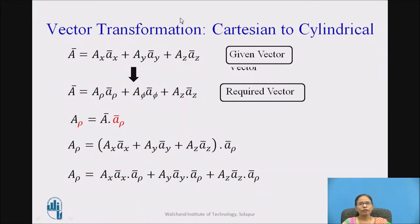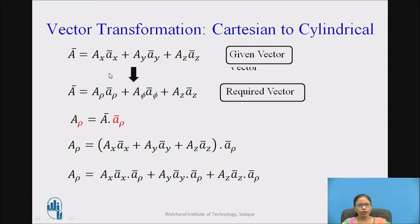Now let us look at vector transformation, cartesian to cylindrical. It means that I have a given vector a-bar, which is Ax·ax-bar plus Ay·ay-bar plus Az·az-bar, where the capital letters are the component values. If I want to transform this to cylindrical form: a-bar equals A_rho·a_rho-bar plus A_phi·a_phi-bar plus Az·az-bar.